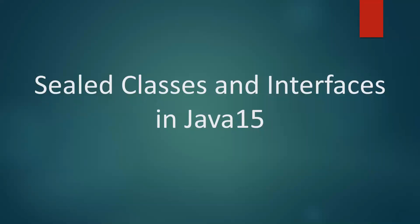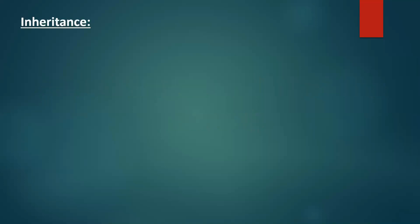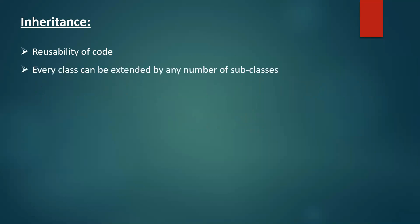Hi everyone. In this video we are going to discuss about sealed classes and interfaces in Java 15. Before version Java 15, inheritance concept was mainly focused on reusability of code. That is, every class can be extended by any number of subclasses. For example, if I have class P, then we can have n number of child classes for the parent class.